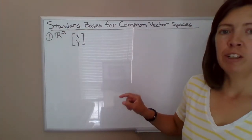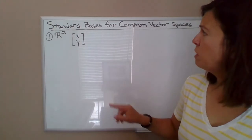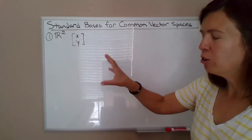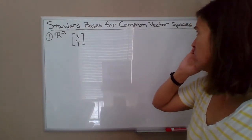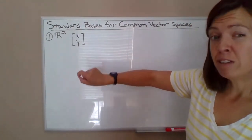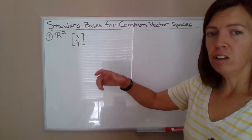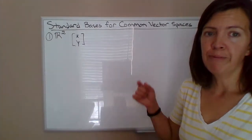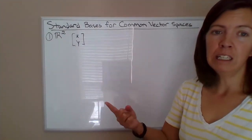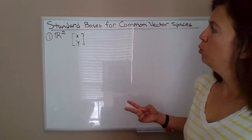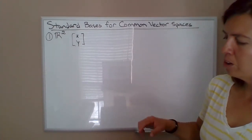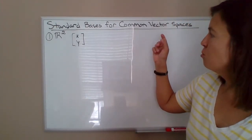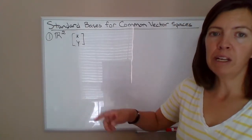So now that you've looked at the definition of a basis of a vector space, I wanted to talk through the standard basis for some common vector spaces. You've seen that the definition of a basis is a collection of vectors within that vector space that meet two criteria. Number one, they're linearly independent. And number two, those vectors span the vector space, meaning you could take any element of the vector space and write it as a linear combination of those vectors.